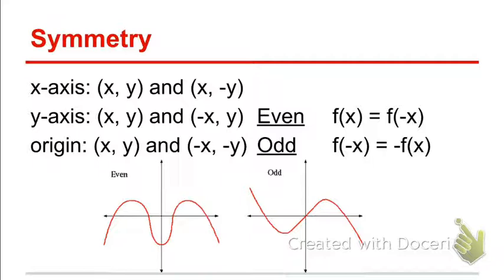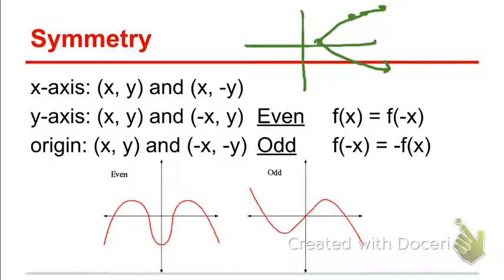Symmetry over the x-axis — something that would have x-axis symmetry could be like a circle shifted to the right, or maybe a sideways parabola, which is not a function, but there are equations that could graph a sideways parabola. A graph is said to have x-axis symmetry if for every point (x, y) there's a paired point (x, -y), meaning another point has the same x value but the opposite y value.